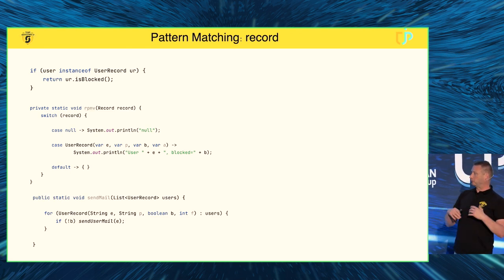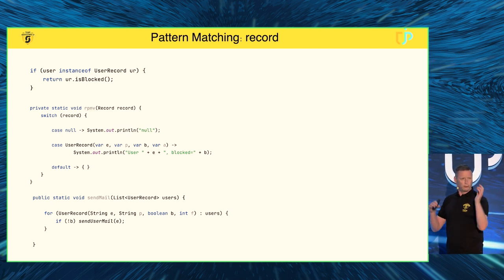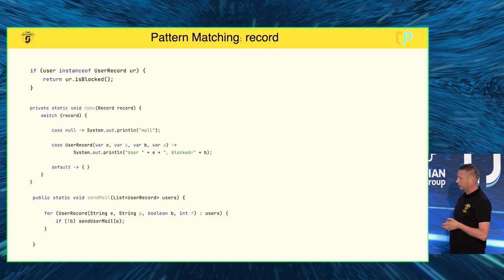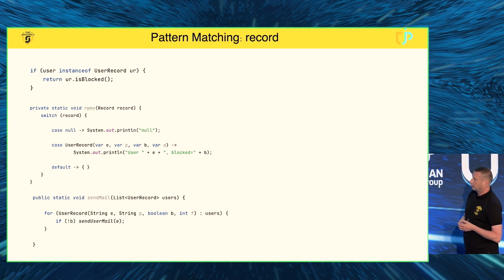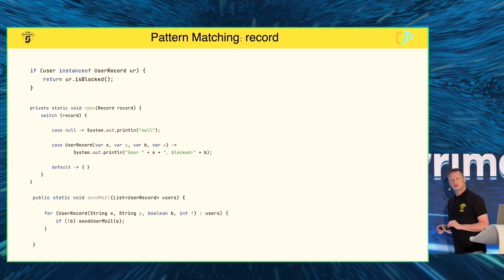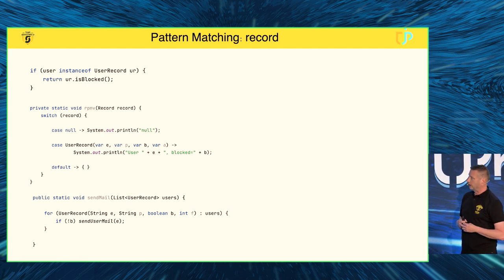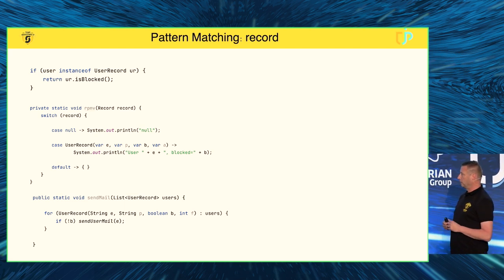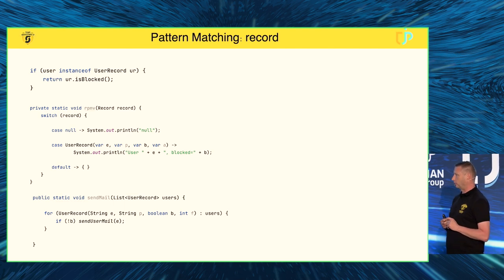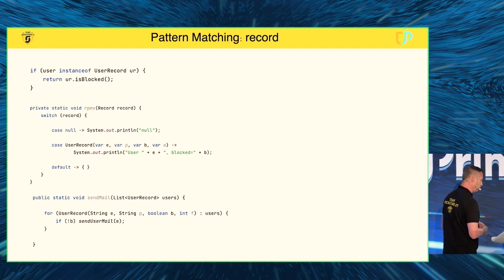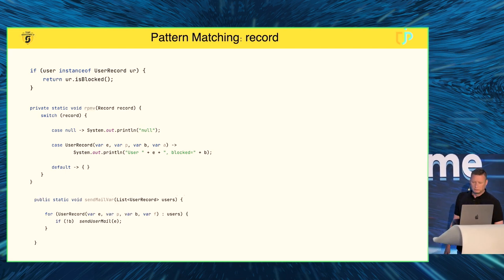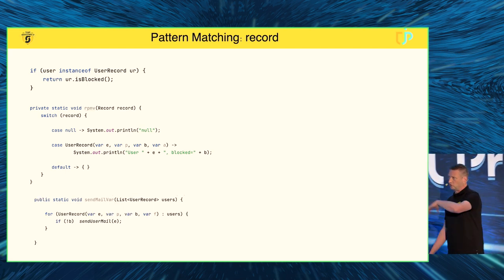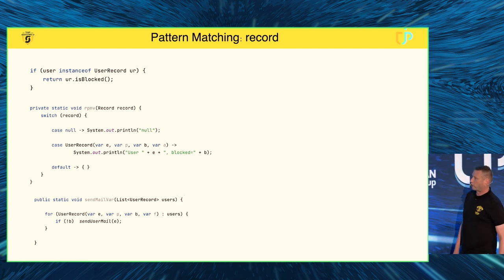There's also a special case: the enhanced for loop, where you loop over a collection and can do destructuring inside the for loop. However, this is a special case — it was available in Java 20 but will be removed again in Java 21 for reasons unknown, though it may come back in the future. You can also use 'var' here instead of specifying the specific types.